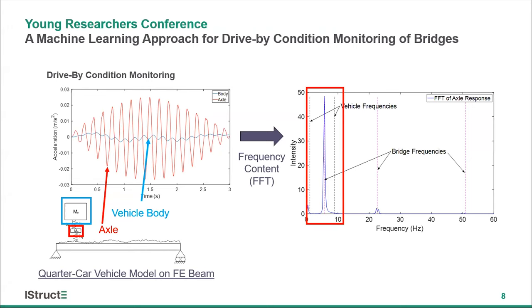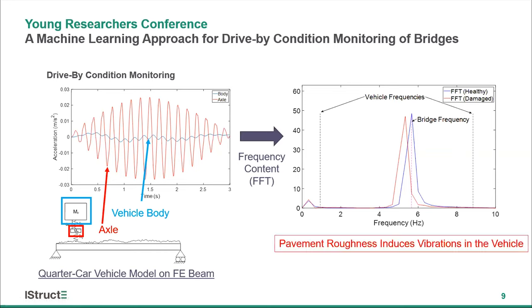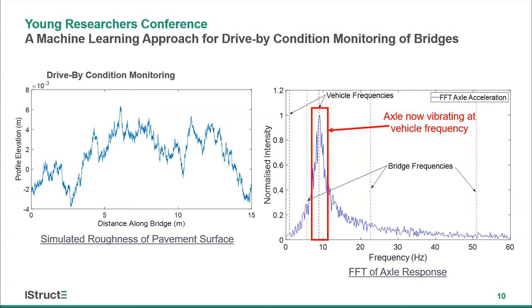If there is damage in the bridge there will be a change in this frequency spectrum, and you can see this when you model some cracking at mid-span. But when we include the effects of the pavement in our simulations, the frequency graph changes quite a lot. The peak shifts over to the first natural frequency of the vehicle — the axle hop frequency. So now it's not quite as easy to extract the behaviour of the bridge from that in-vehicle measurement.